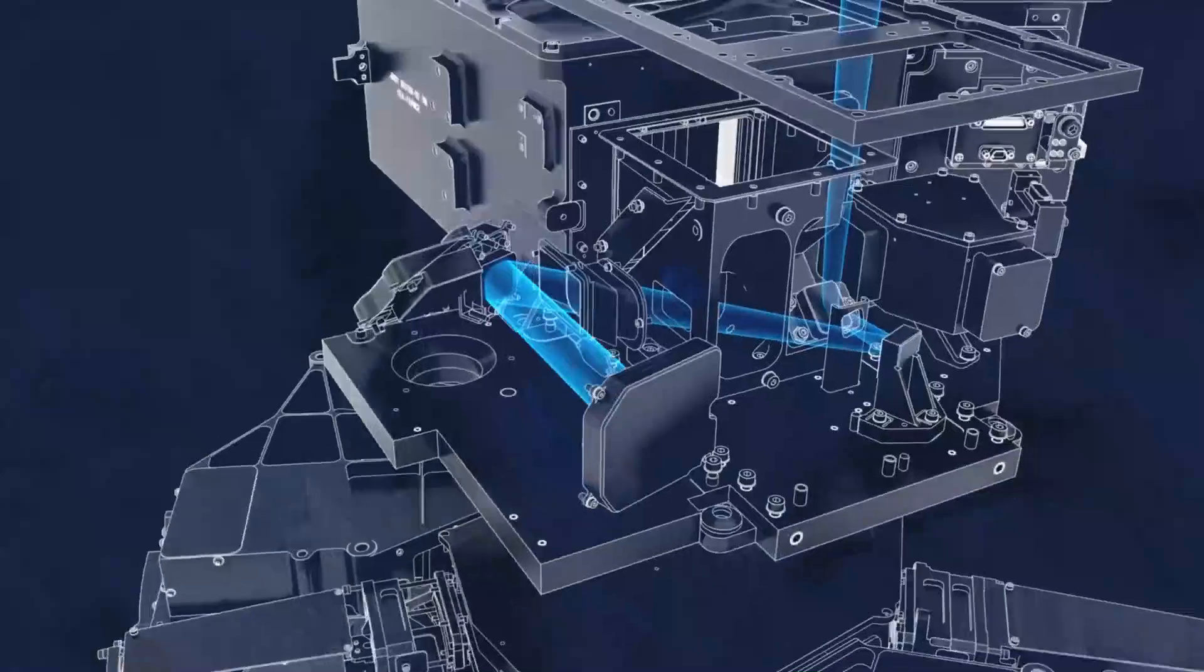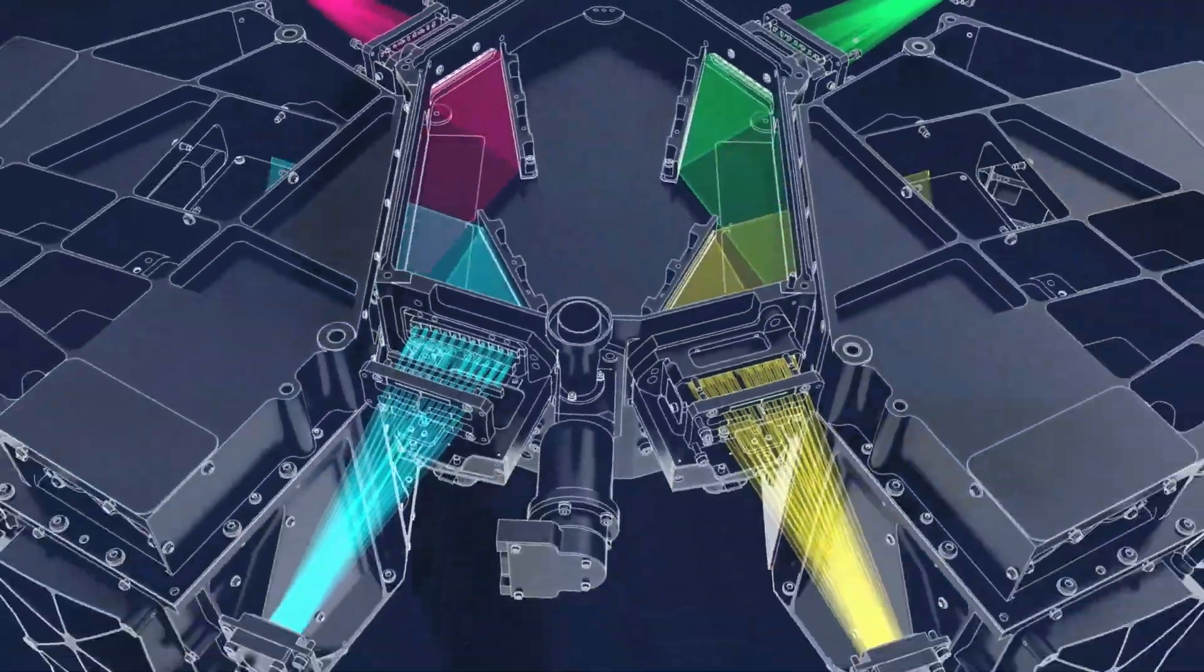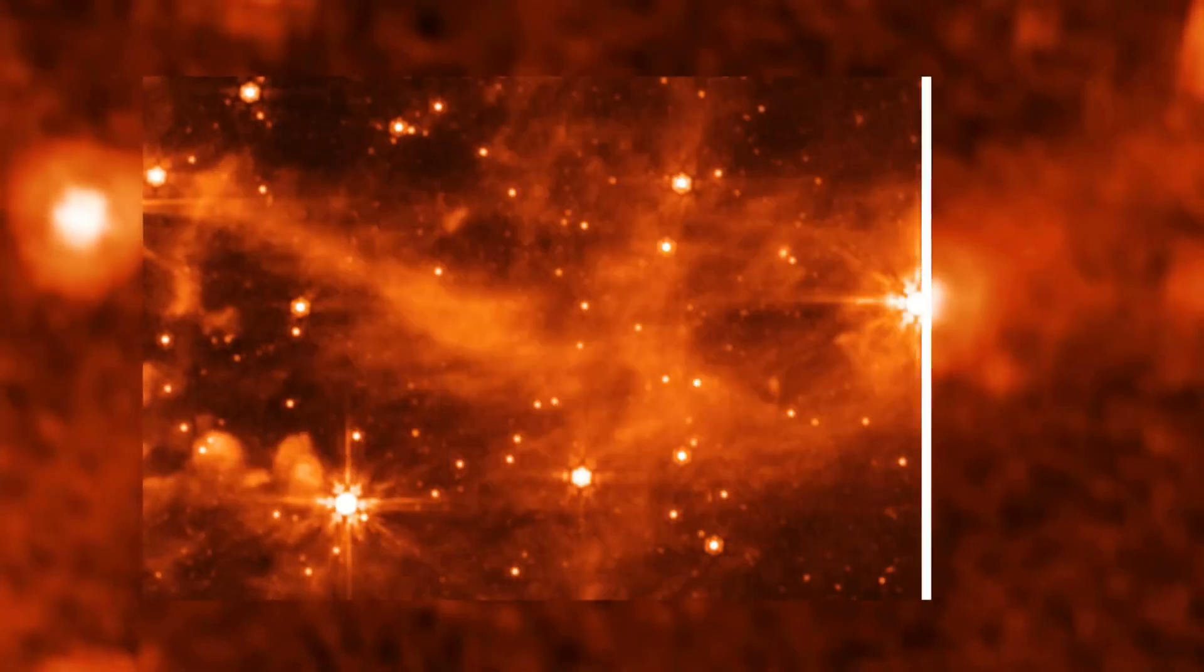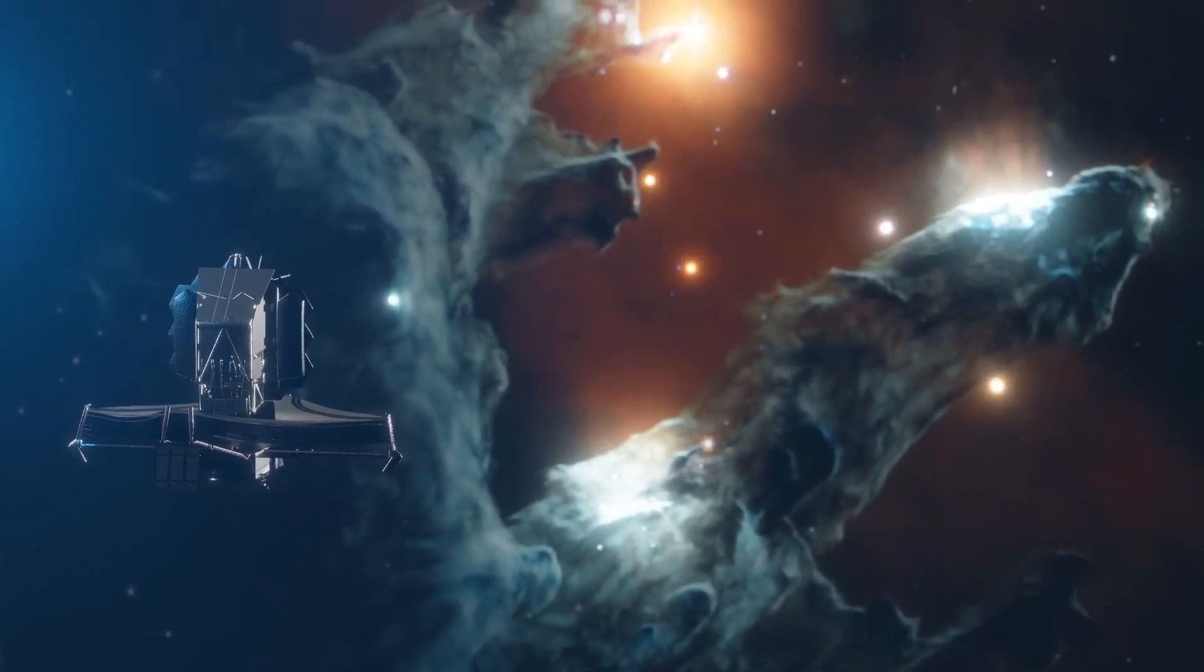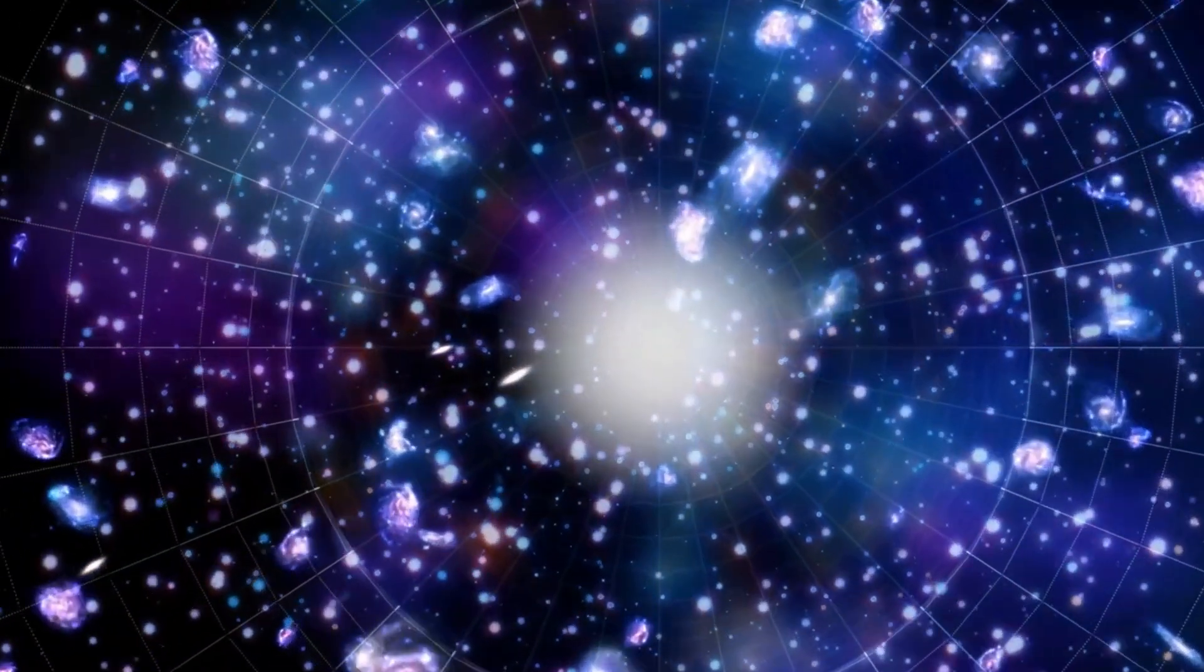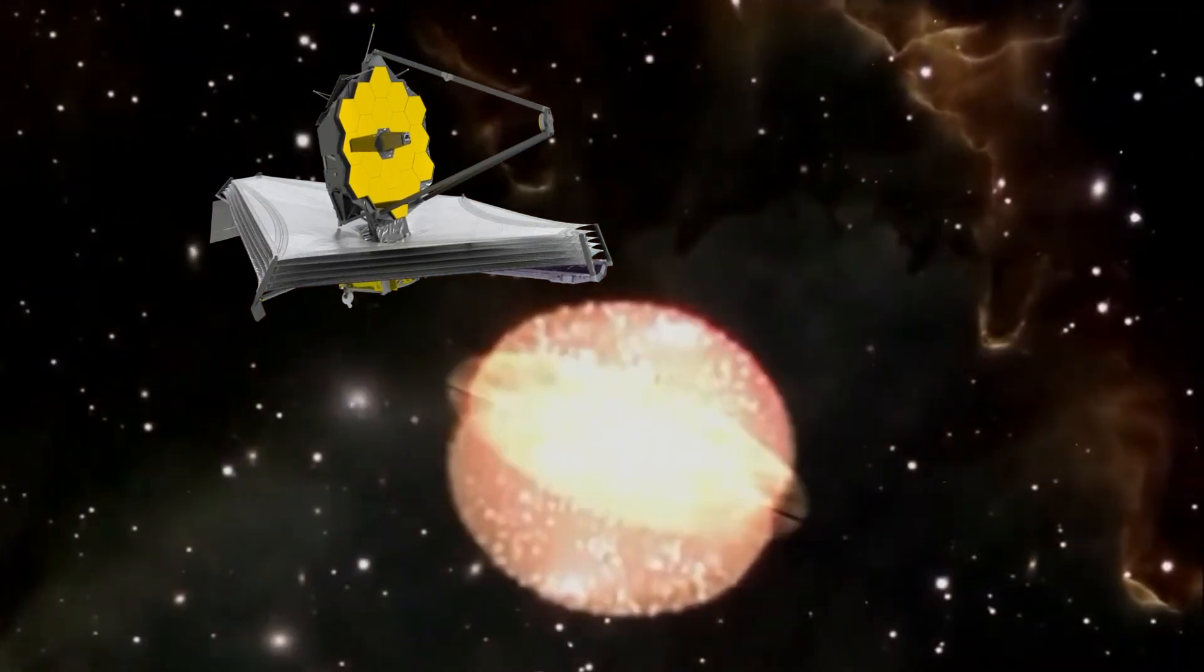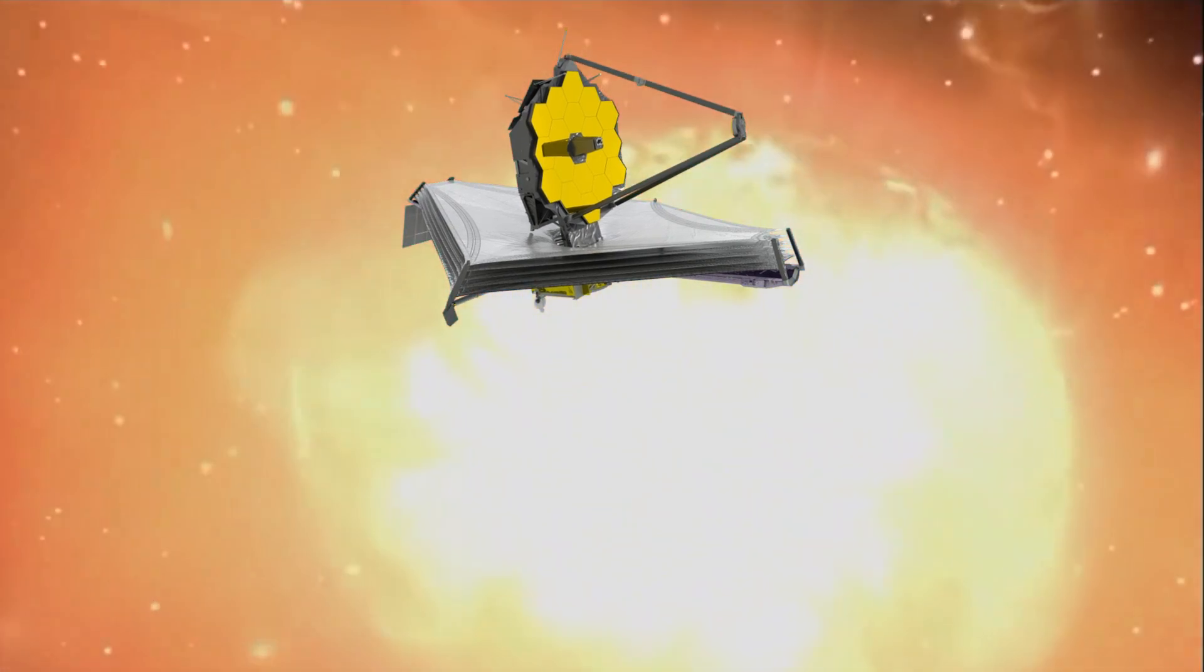What makes Webb's approach so unique is its combination of cutting-edge infrared optics and its position beyond Earth's atmosphere, offering a pristine view of the universe. By detecting the faintest infrared signatures, the telescope can map out the very structure of a supernova, determining its location, the surrounding environment, and the specific processes at play within the explosion.